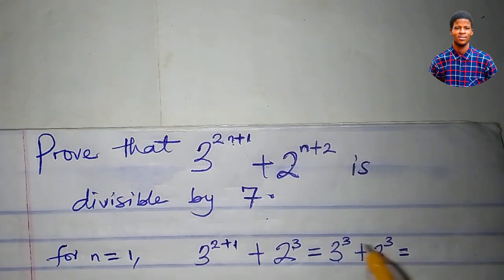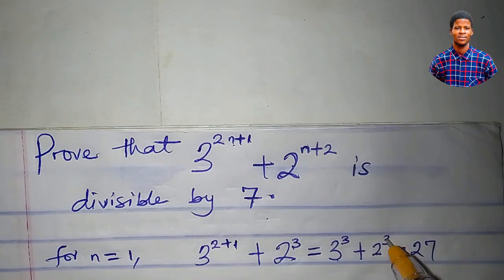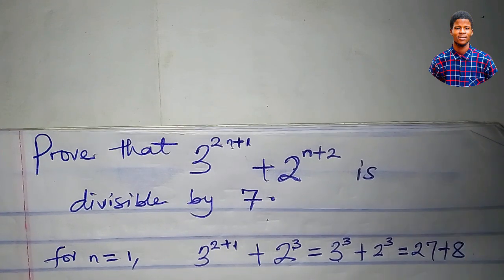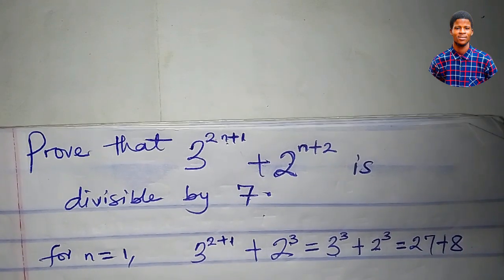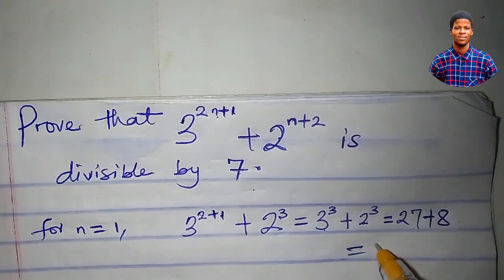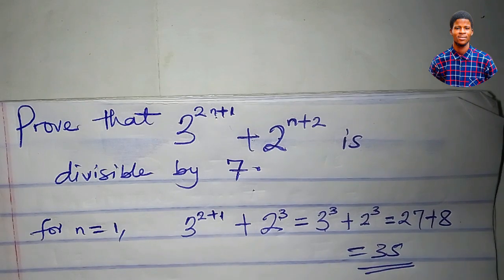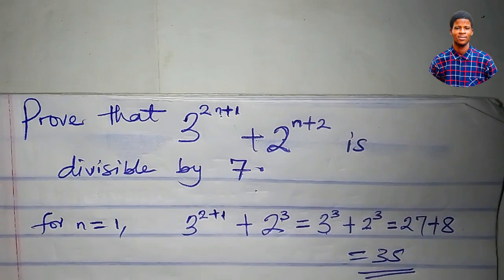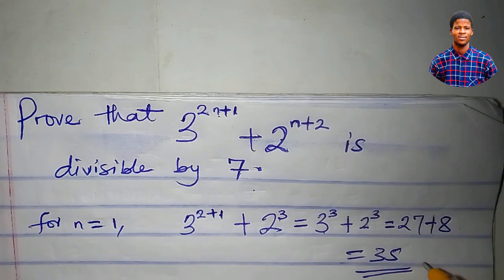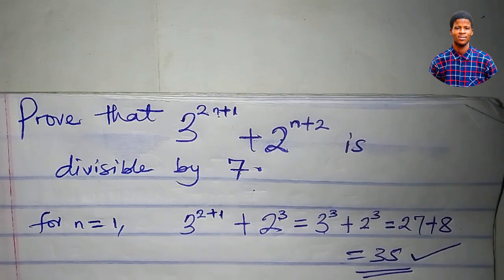3 cubed is 27, and 2 cubed is 8. So 27 plus 8 gives us 35. And 35 is divisible by 7 — divide 35 by 7, you get 5 without a remainder. This means it is true for n equal to 1.